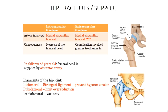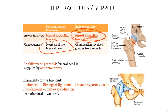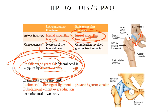Hip fractures: a fracture of the neck of the femur (intracapsular) damages the medial circumflex femoral artery and its retinacular branches. The key artery to remember is the medial circumflex. The consequence is necrosis of the femoral head — unless the patient is under 8 years old, because children have an obturator artery providing additional blood supply that closes off after age 8.